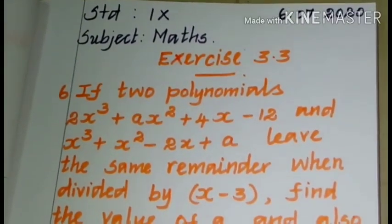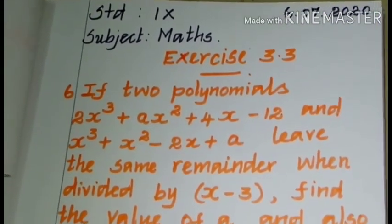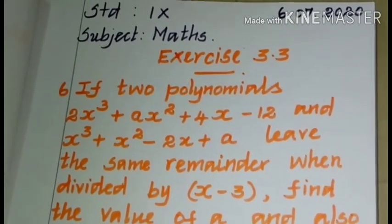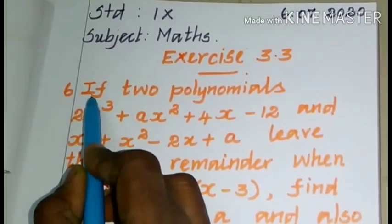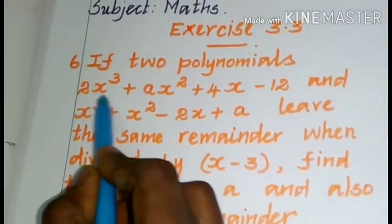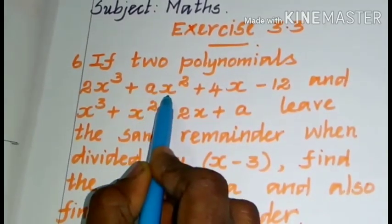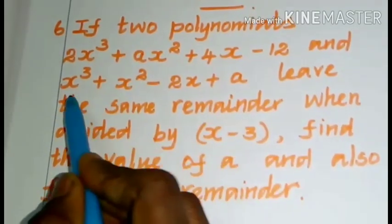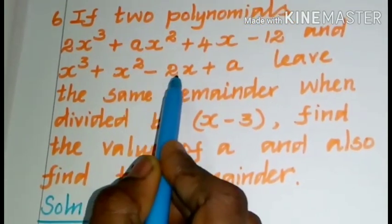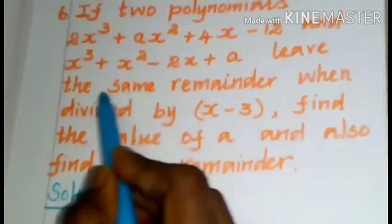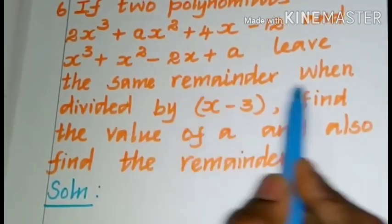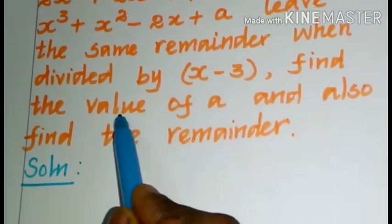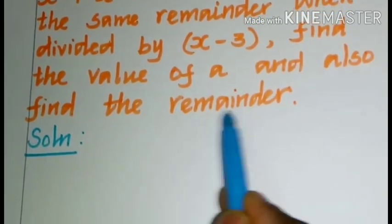Hello students. In 9th Maths Chapter 3 Algebra, today we learn Exercise 3.36. First we read the question: if two polynomials 2x³ + ax² + 4x − 12 and x³ + x² − 2x + a leave the same remainder when divided by x − 3, find the value of a and also find the remainder.